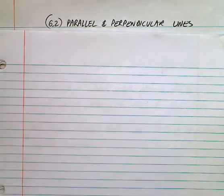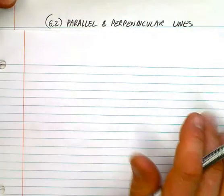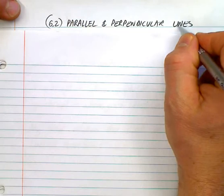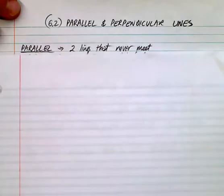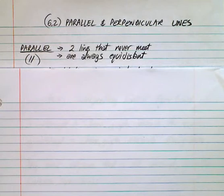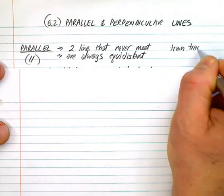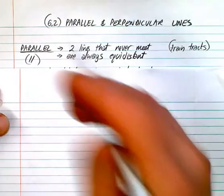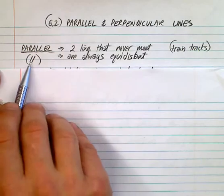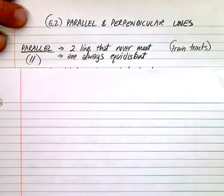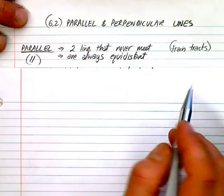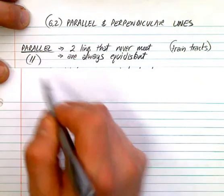Ladies and gentlemen, here we go — parallel and perpendicular lines. Parallel means two lines that never meet; they're always what we call equidistant. The best example is train tracks — that's the most obvious way to explain parallel lines. This is the symbol we use for parallel. Equidistant means equal distance, so the lines are always the same distance apart no matter where you are.